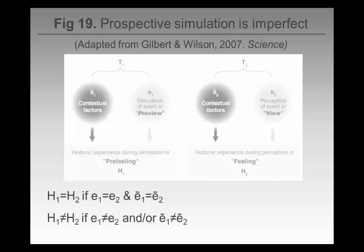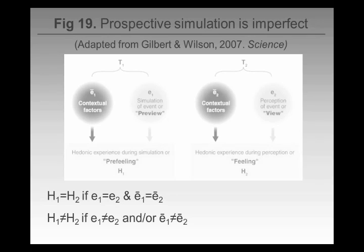Why does it happen? One of the reasons it might happen is because prospective thought is an imperfect system, essentially. There are instances where your ability to simulate the future will reflect what actually happens. Your ability to think about an unfolding situation in a race and crucially how you might feel in the future in that situation could be accurate — in which case it's quite likely that your pre-feeling and therefore your subsequent decision will be a good one.